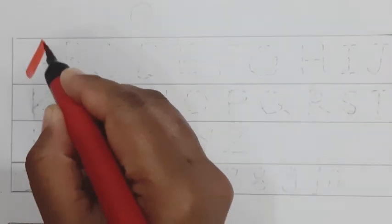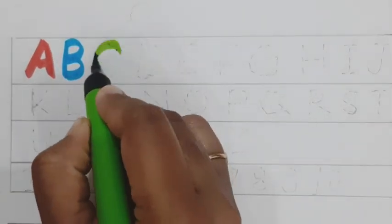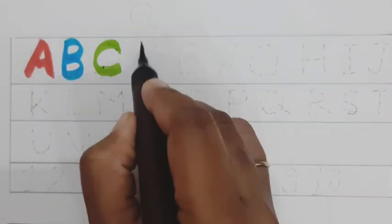A. A for Ant. B. B for Banana. C. C for Cat. D. D for Dog.